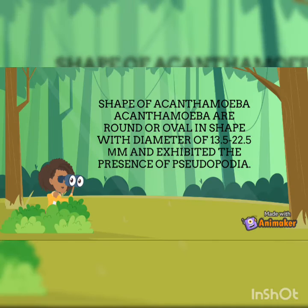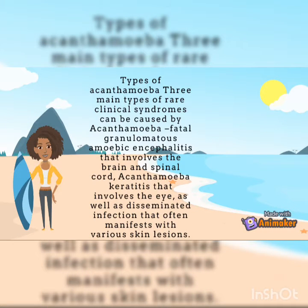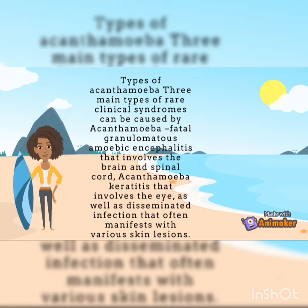Acanthamoeba are round or oval in shape with a diameter of 13.5 to 22.5 μm and exhibit the presence of pseudopodia. Three main types of rare clinical syndromes can be caused by Acanthamoeba: fatal granulomatous amoebic encephalitis involving the brain and spinal cord, Acanthamoeba keratitis involving the eye, and disseminated infection that often manifests with various skin lesions.